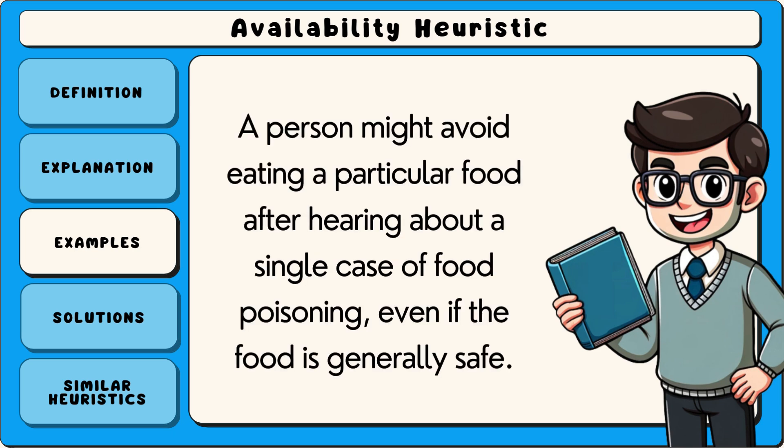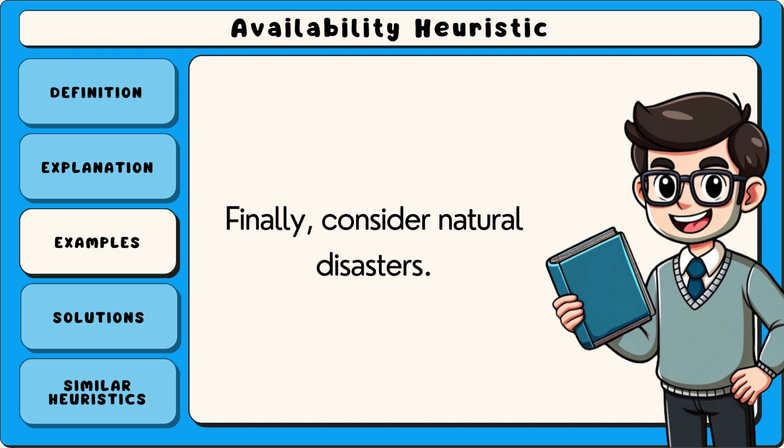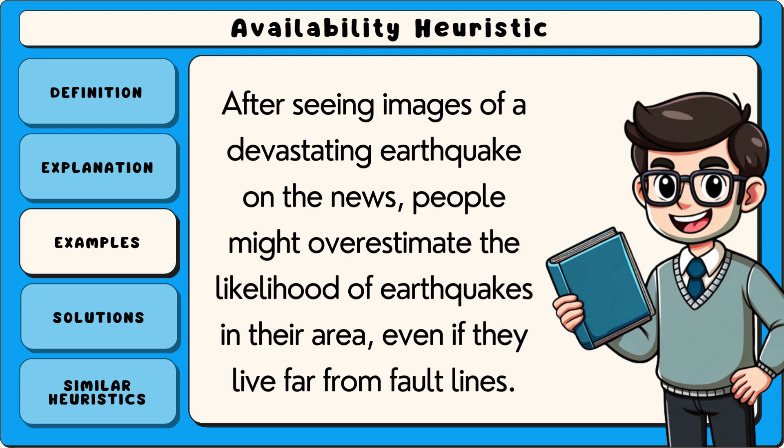Another example is in health concerns. A person might avoid eating a particular food after hearing about a single case of food poisoning, even if the food is generally safe. Finally, consider natural disasters. After seeing images of a devastating earthquake on the news, people might overestimate the likelihood of earthquakes in their area, even if they live far from fault lines.